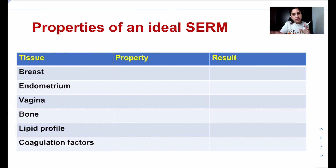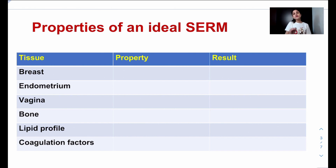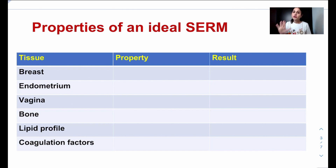On the other hand, on the endometrium, estrogen causes hyperplasia and hypertrophy. If estrogen is given long-term, it can lead to endometrial cancer — that's a bad effect. So if we're designing an ideal drug, we wouldn't want it to cause cancer. We would want the SERM to have an antagonistic effect on the endometrium so it does not cause hyperplasia. That would be an ideal SERM.